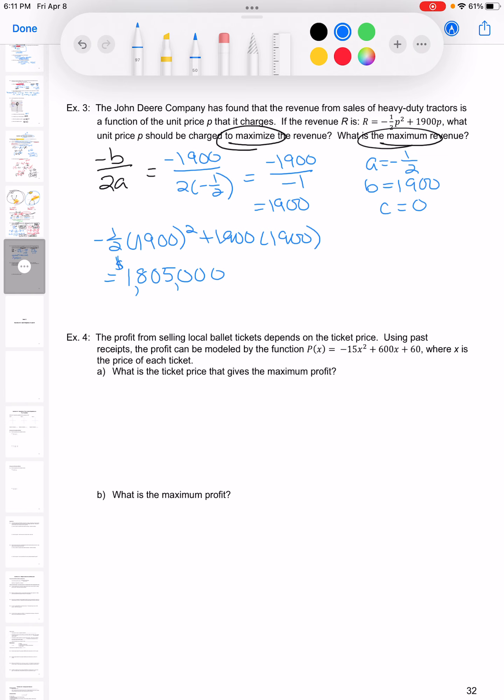So $1,805,000. So my vertex is really this point – 1900, $1,805,000. So this 1900 is the price that I should be charged to maximize my revenue. And this $1 million is that max revenue.